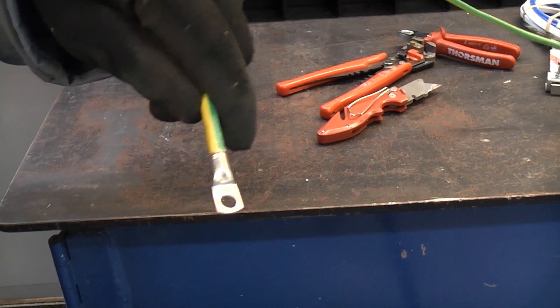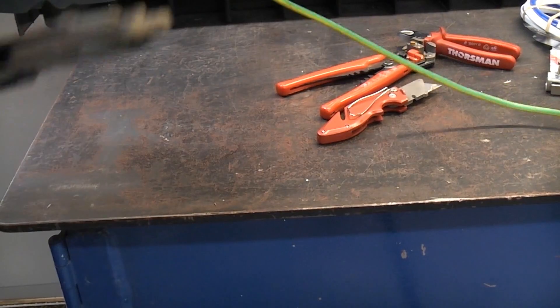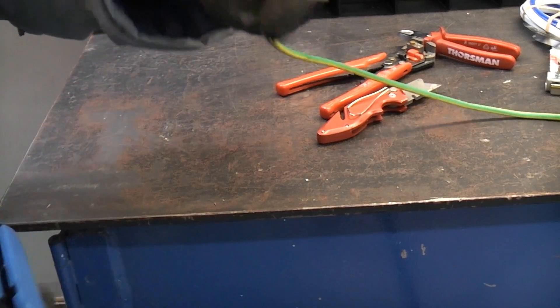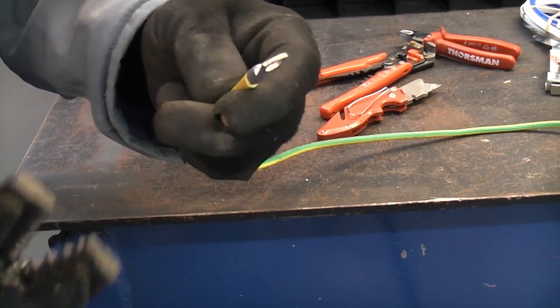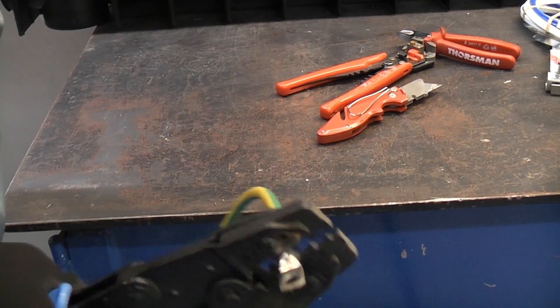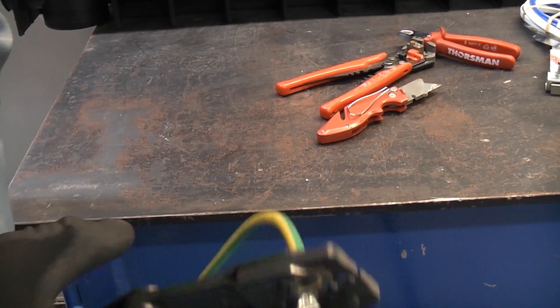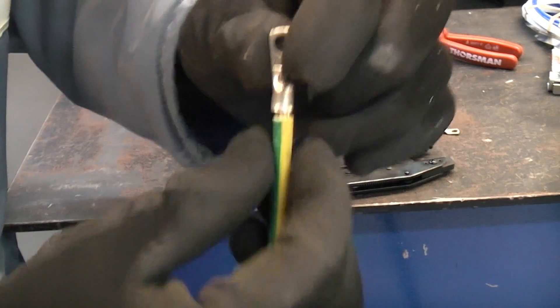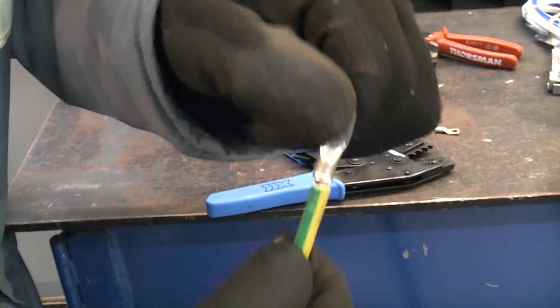So that is on as far as it will go. Then I'm going to take the crimping pliers and I'm going to crimp the lug onto the end of the wire. That has crimped the lug successfully to the end of that wire.